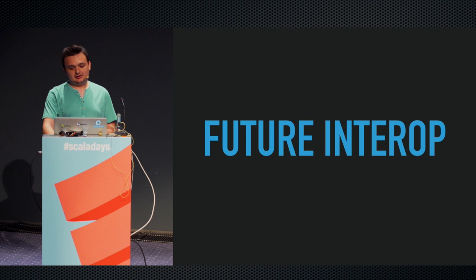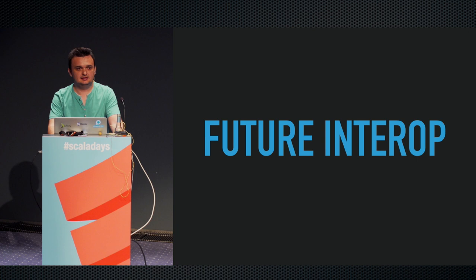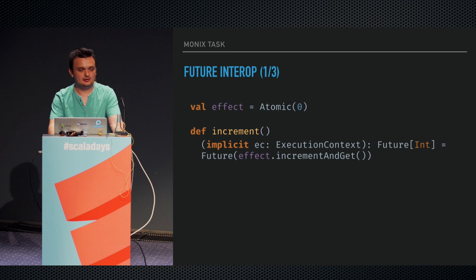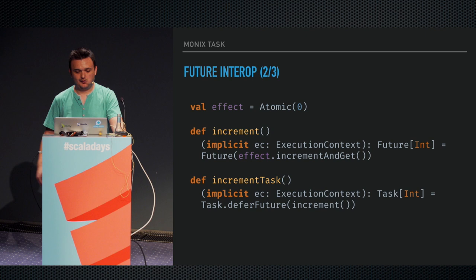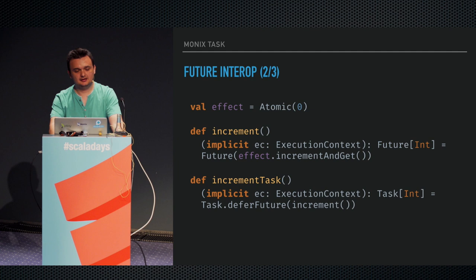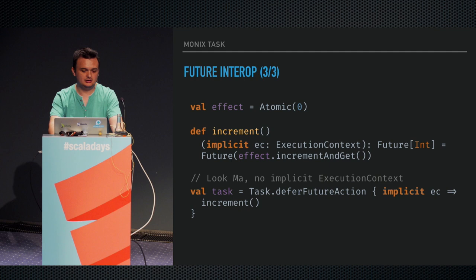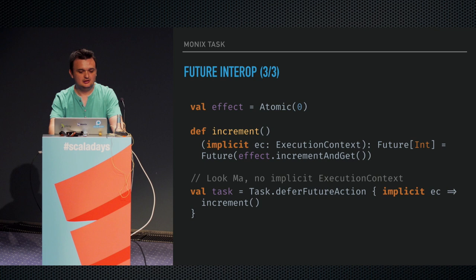Speaking of taking that execution context all over the place, let's transform a Future-based API into something that uses Tasks. We've got an increment that increments some shared state — we can describe that in terms of tasks by deferring that future. deferFuture will make that function call lazy, corresponding to task semantics. We still have the execution context, but we've already taken that scheduler in runAsync. deferFutureAction can give you that execution context and hide it in the final task reference, because you don't need it until you actually execute the task — at the end of the world somewhere.